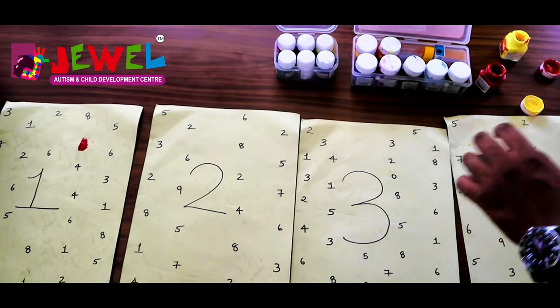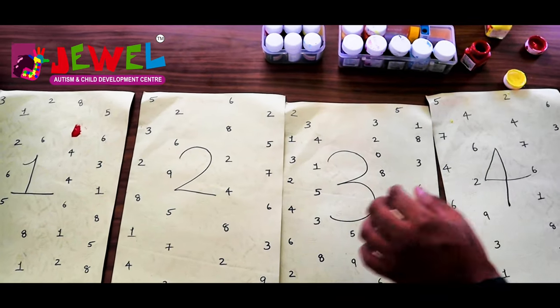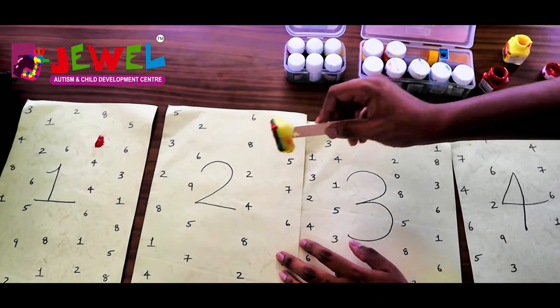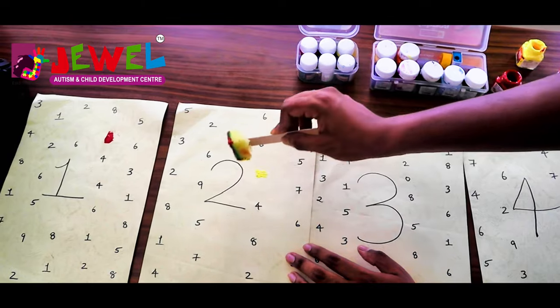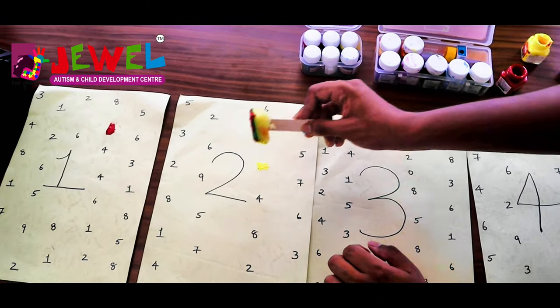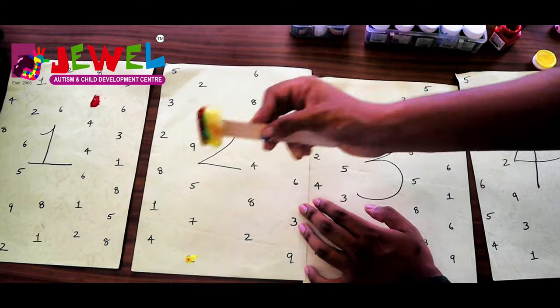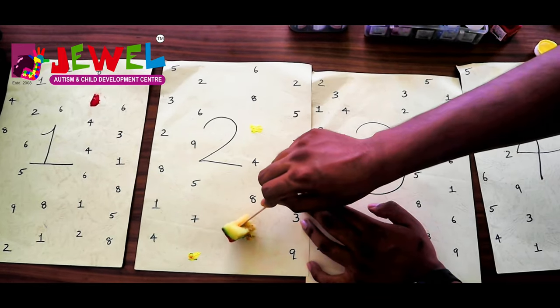Here, for target number two, the child takes the yellow color and is asked to paint the target number two which is around this number. So the child should find where the target number is and paint it on the paper.